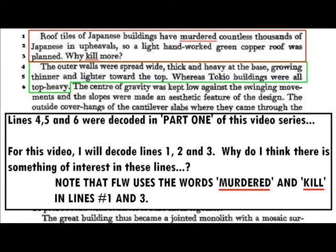I've outlined the text to be analyzed in red — lines 1, 2, and 3. Recall that in part one, lines 4, 5, and 6 were decoded. What is it about the first three lines that I think are interesting? Take note of the fact that in line one he uses the word 'murdered,' and in line three he uses the word 'kill.' Having these two words used in such close proximity, when there's a secret code in lines four, five, and six, is an indication that there's something of interest here to investigate.